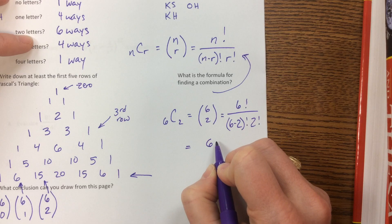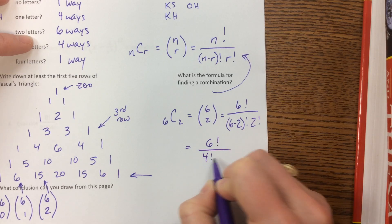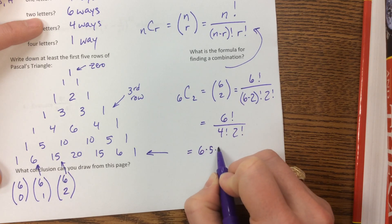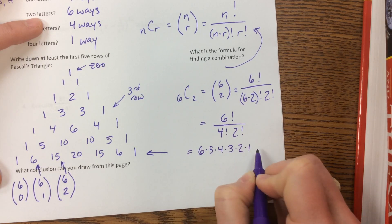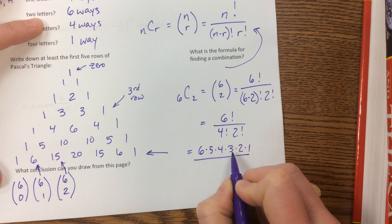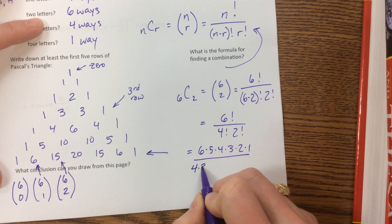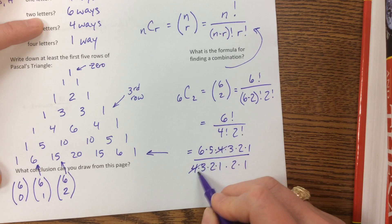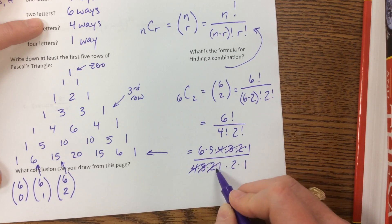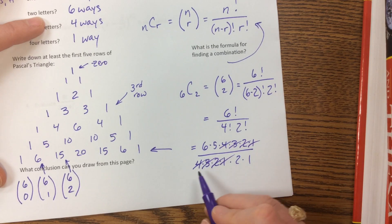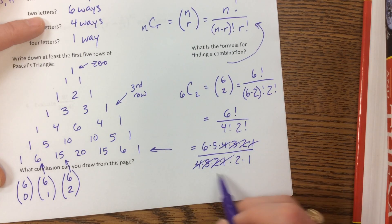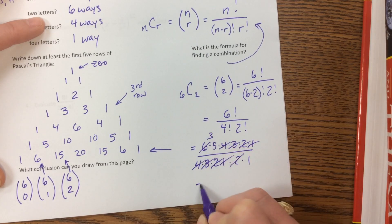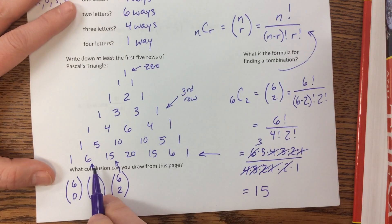Let's do that one real fast. So say we say six, choose two, or they've written it six, choose two. This is six factorial over six minus two factorial, two factorial, which becomes six factorial over four factorial times two factorial. Notice this is six times five times four times three times two times one. Six, five, four, three, two, one. Four times three times two times one times two times one. This cancels, and I end up, notice that this four factorial, canceled with four factorial right here, and I did six divided by two, this goes in there three times, and so this is equal to 15, which was what that value was right here.